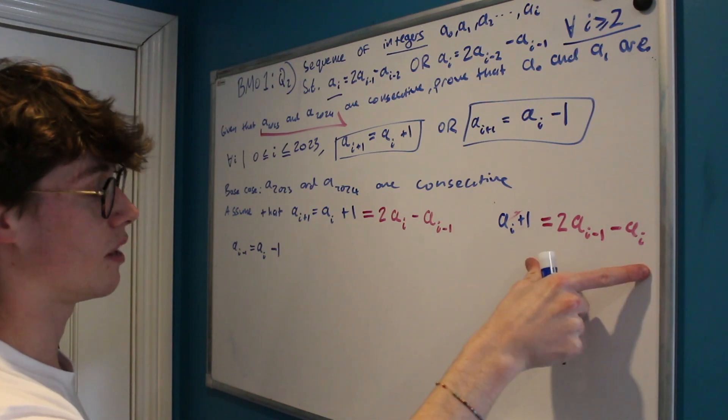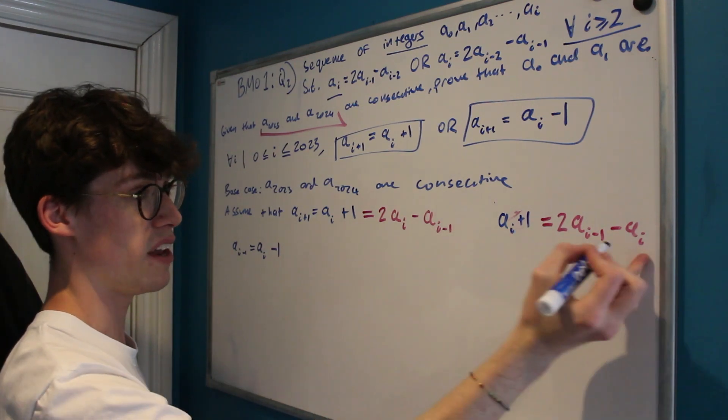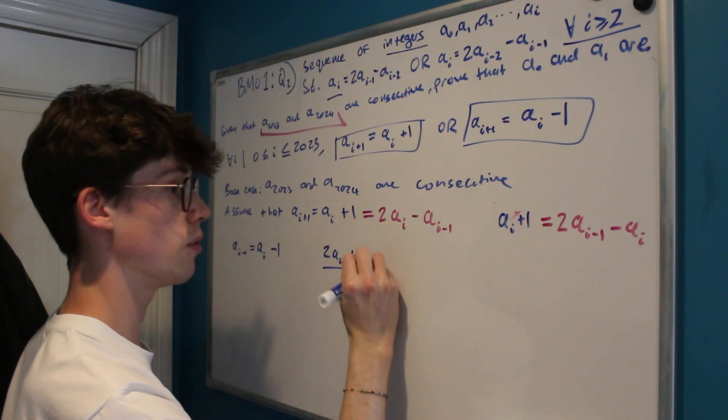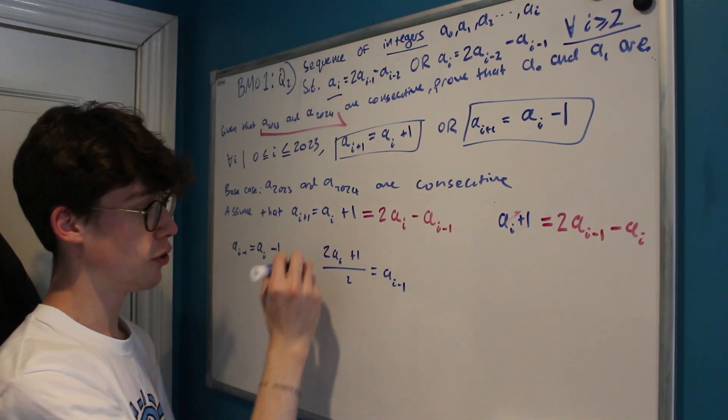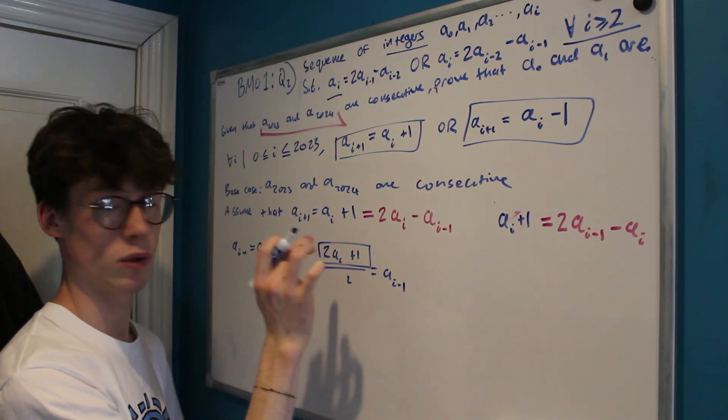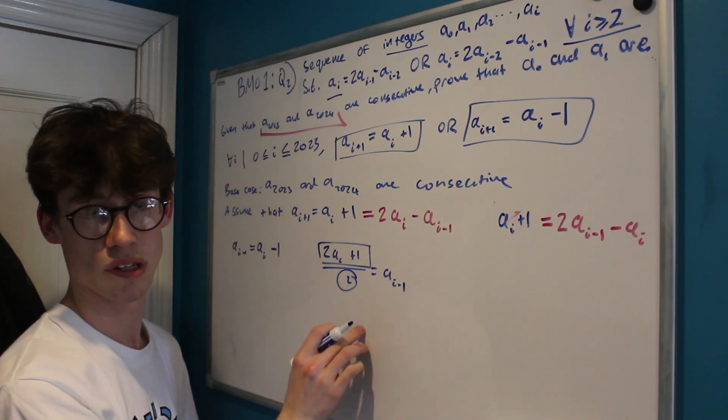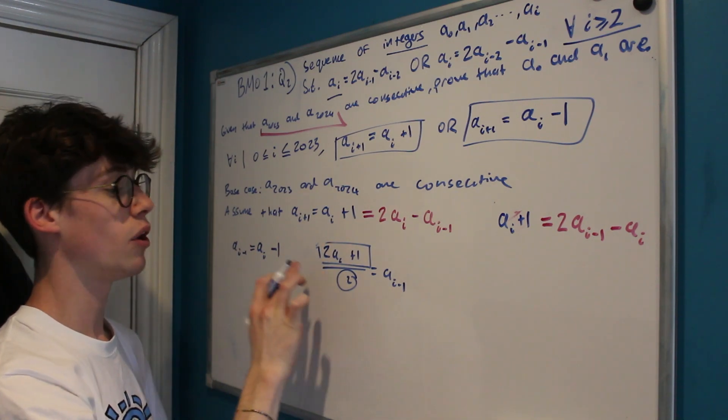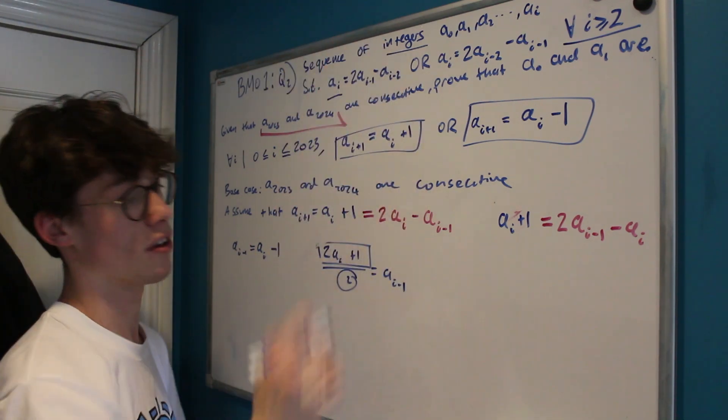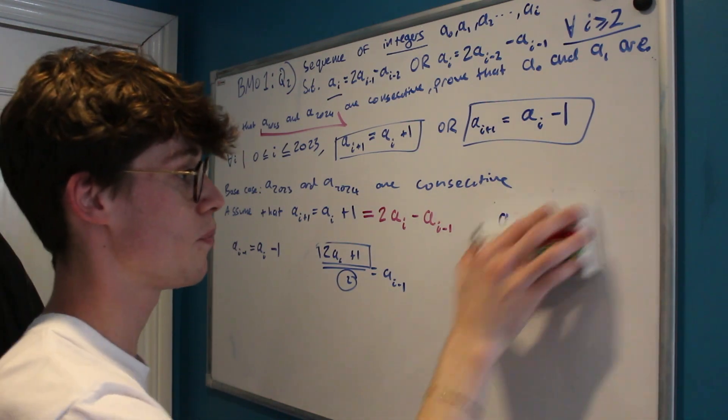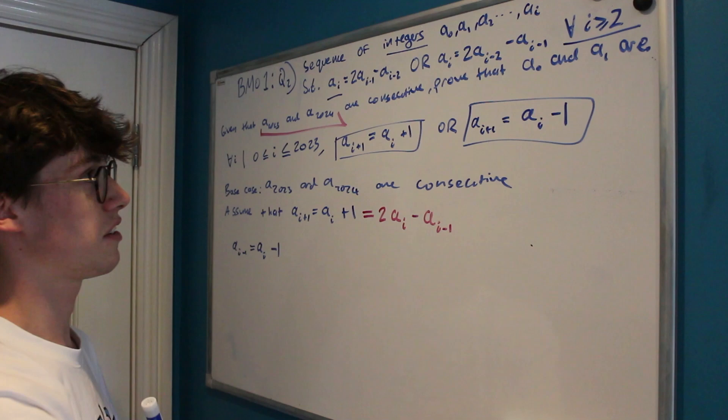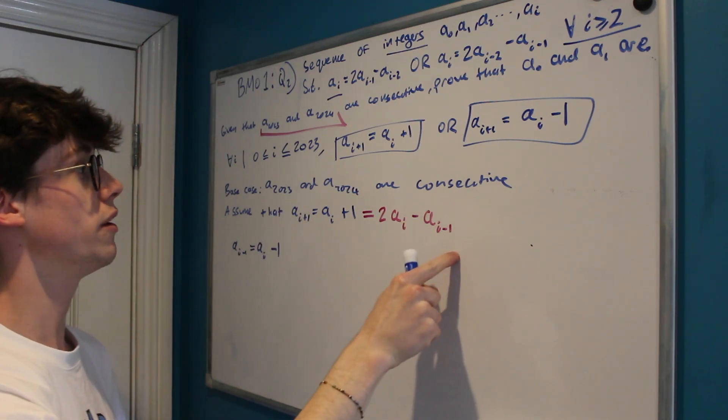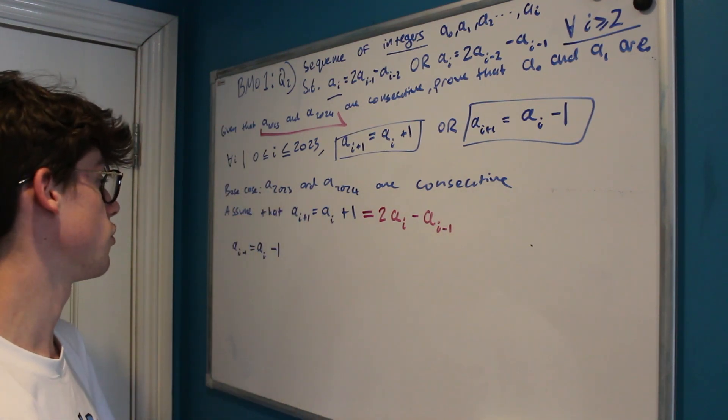So let's have a look at what this tells us. If this were to be true then if we add ai over here we would have that 2ai plus 1 over 2 equals ai minus 1. And you'll notice that 2ai plus 1 will always be odd and we're dividing by 2 which is always even, and so this will always be a fraction. And it's worth noting that we've been told that every part of our sequence is an integer, and so we can discard this possibility. And so we only have to consider the case in which ai plus 1 equals 2ai minus ai minus 1, and luckily this yields for us exactly the result we wanted.